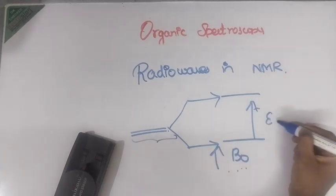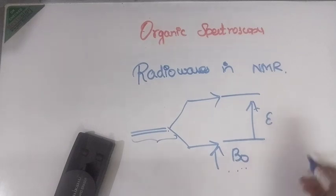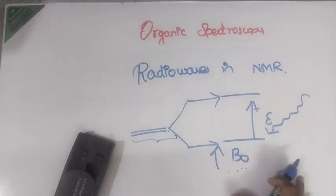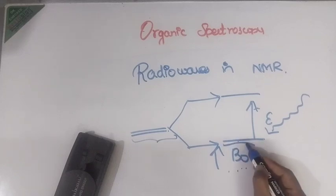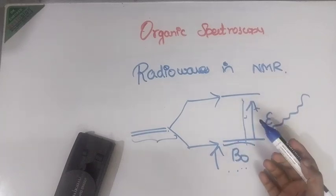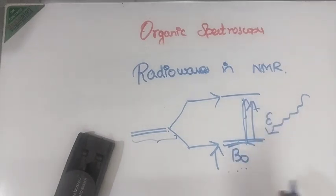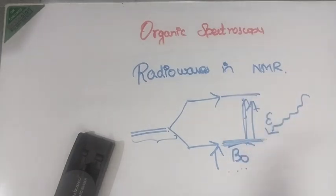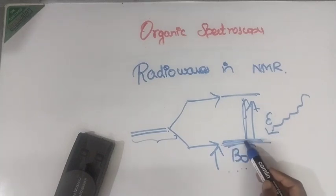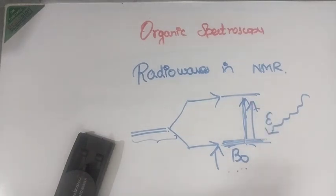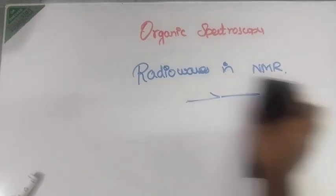There is some energy gap. When you apply radio waves, the molecules present in the lower energy level will move to the excited state — these are the transitions we observe in NMR. In the ground state the number of molecules is high; they move to the excited state in order to balance. We are seeing these transition signals in NMR. This is how NMR works.